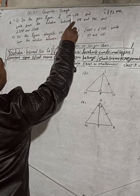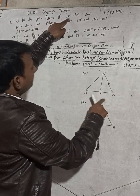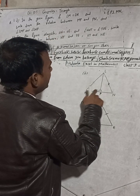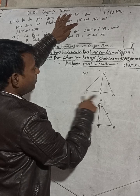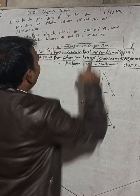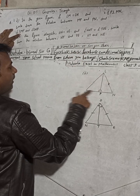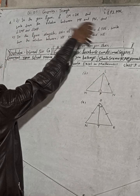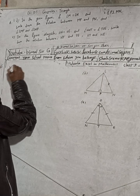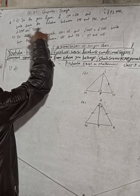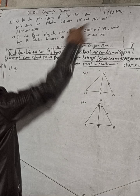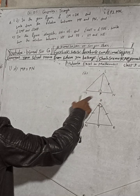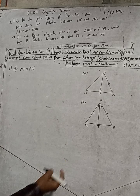Now question 1D: in the given figure, if LM is equal to LN, and LP is perpendicular to LN — perpendicular means this is 90 degrees — write down the relation between MP and PN. The answer is: MP is equal to PN.